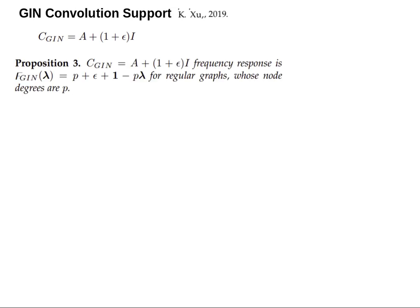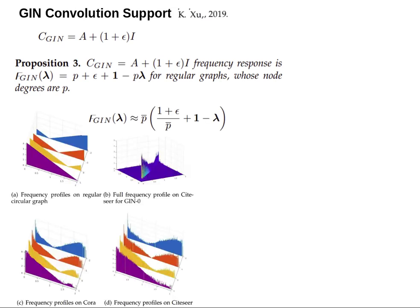Graph isomorphism network, represented in spatial domain by learnable parameter named epsilon. We theoretically calculate its frequency response for regular graph as a function of average node degree and epsilon.